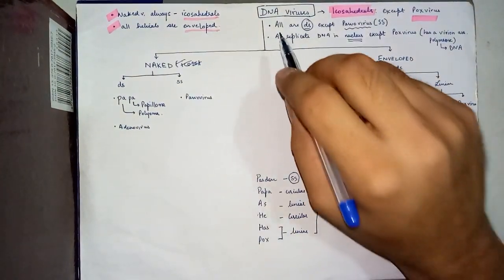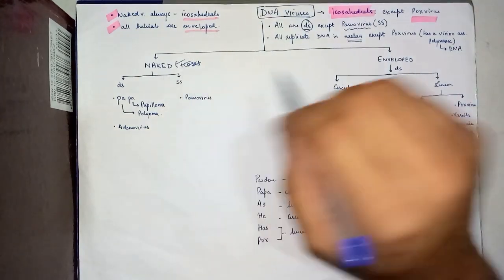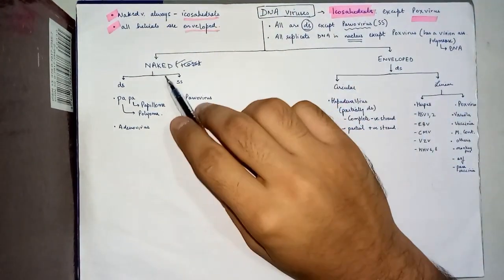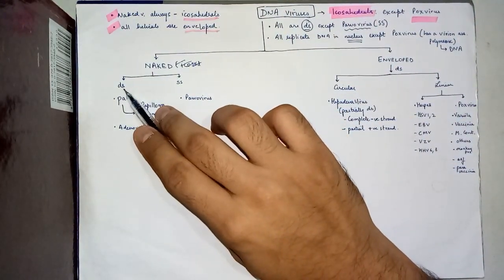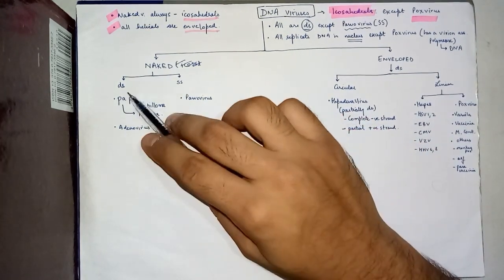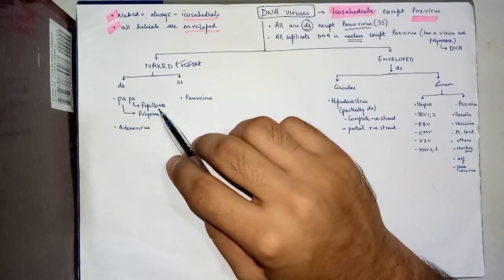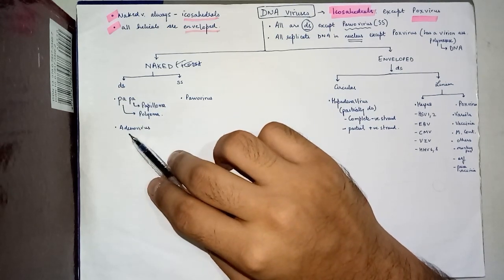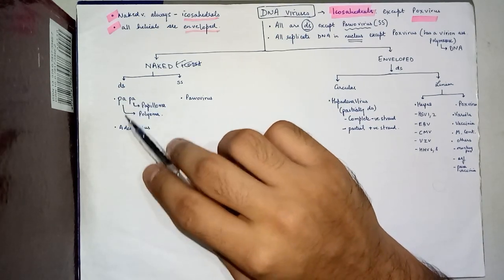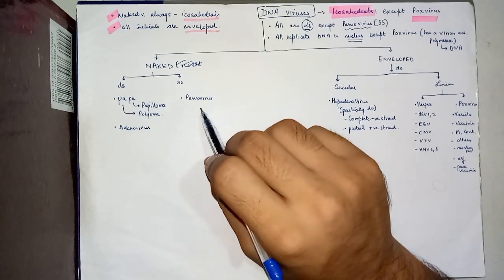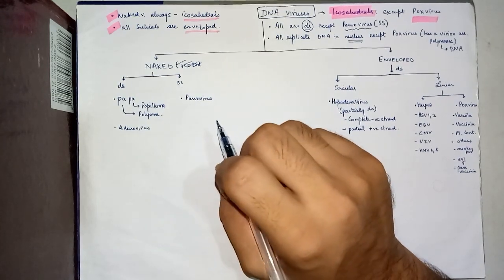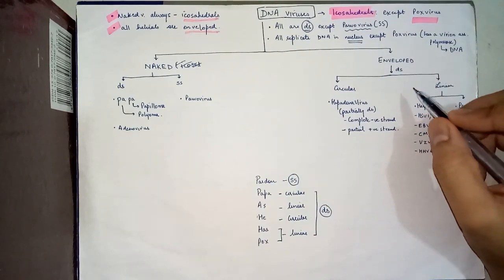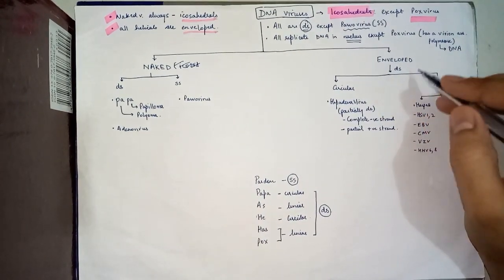We can divide the DNA viruses into naked and enveloped. The naked viruses can be further divided into double stranded and single stranded. The double stranded includes Papa, which is polyoma and papilloma virus, and adenovirus. Parvovirus is a single stranded naked DNA virus.